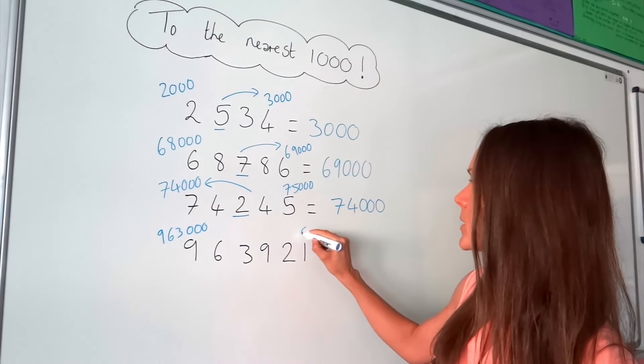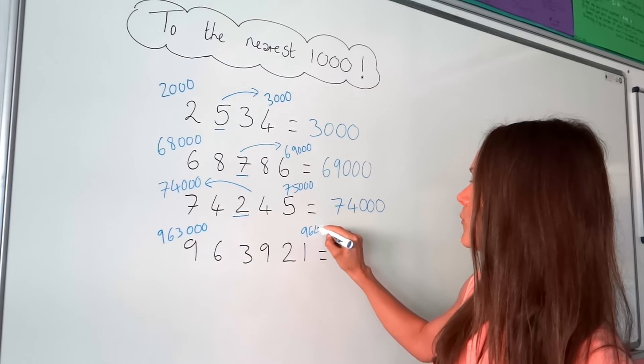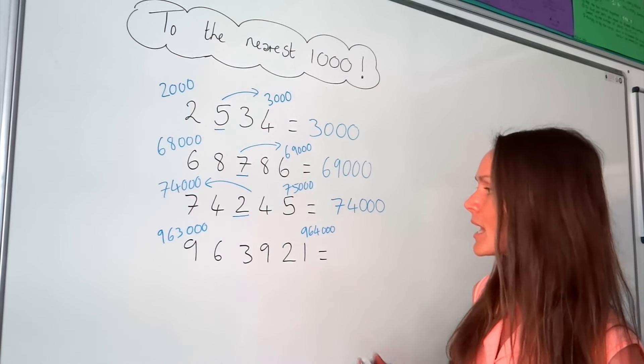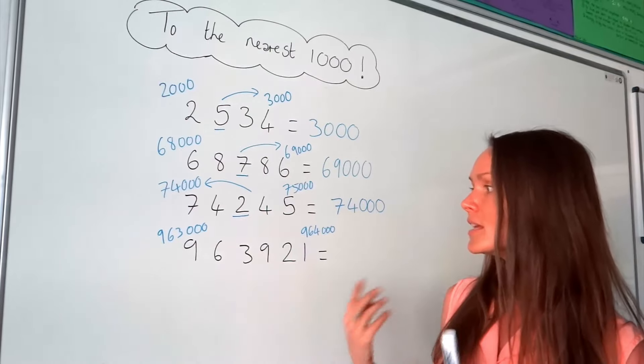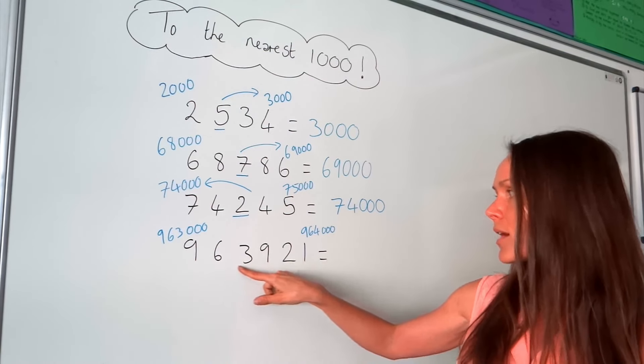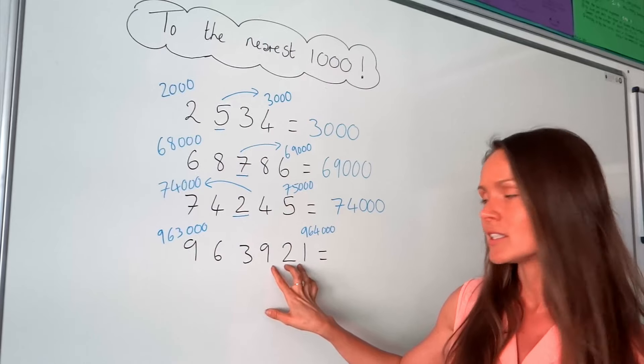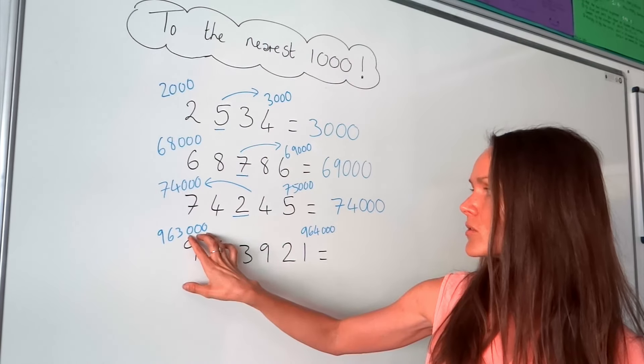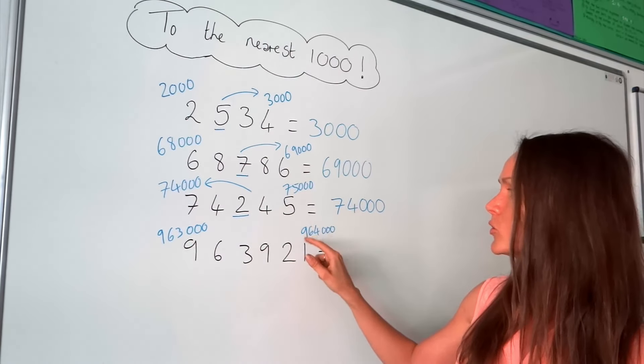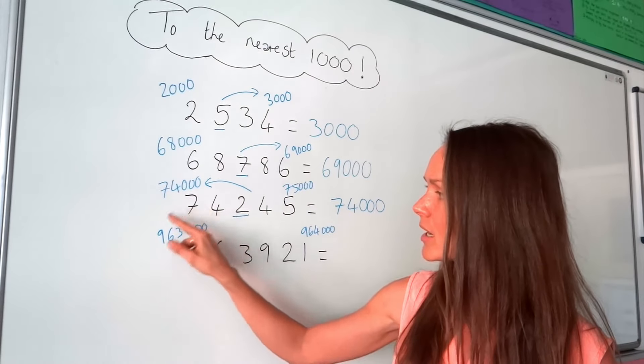And this one must be 964,000. So again, if you can't spot those, the easiest way is to write that number out again, but changing those last three digits there to zeros. And then to find this one, you just add 1,000 to this number here.